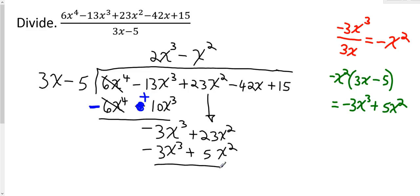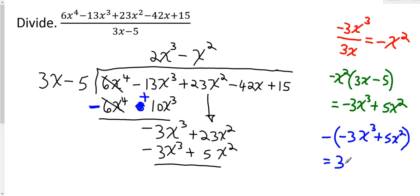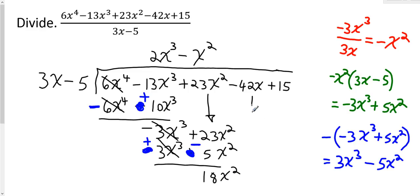I subtract negative 3x cubed plus 5x squared. Distributing the negative changes the signs: positive 3x cubed and negative 5x squared. The leading terms, negative 3x cubed and positive 3x cubed, cancel. Then 23x squared minus 5x squared gives 18x squared. I bring down the next term, which is negative 42x, and repeat the whole process again.